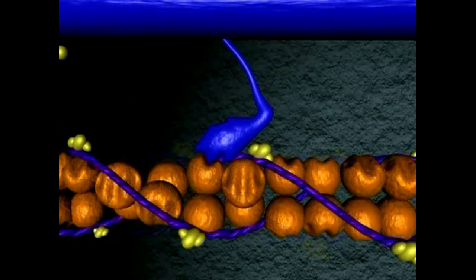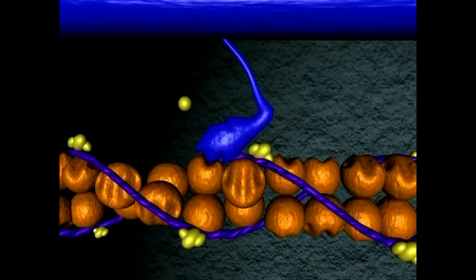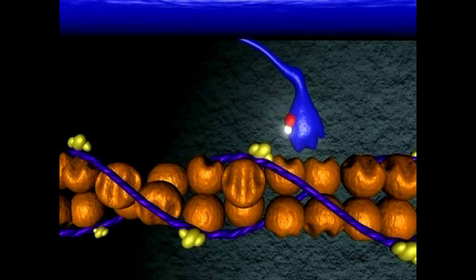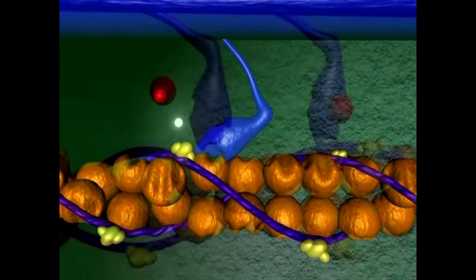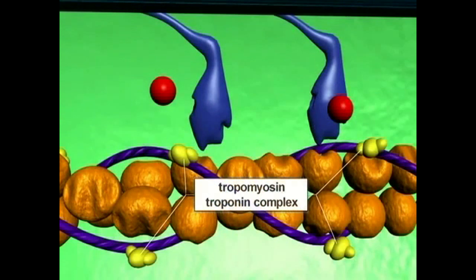The cycle begins anew when another ATP binds to myosin. At rest, most cross-bridges are in the cocked configuration, prepared to interact with actin when the tropomyosin-troponin complex is moved away from myosin binding sites on actin by calcium ions.